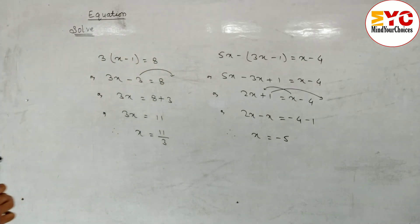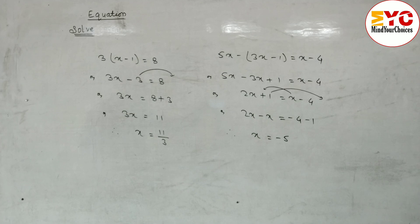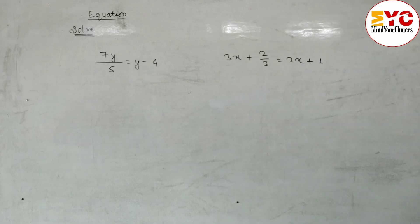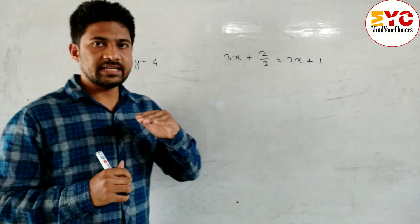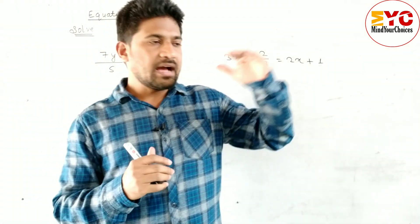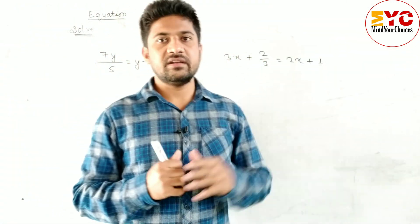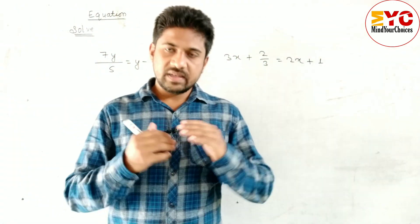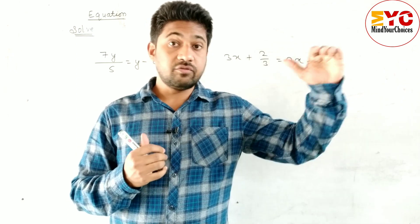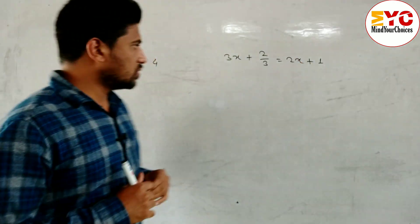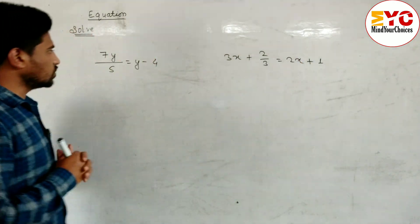Hope you understand this equation and how to solve it. Now look at next. I am solving the problems from easy to hard — first you will get easy ones, then harder and harder, so you will score from 2 marks, 3 marks, and 4 marks. So look at this question here.